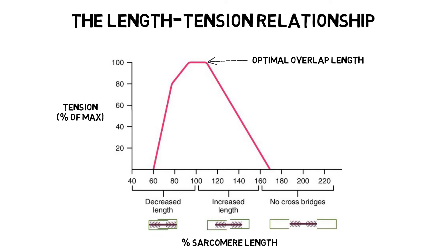Lengthening or shortening a muscle beyond this point will reduce the amount of connection between the actin and myosin, and therefore reduce its force output.